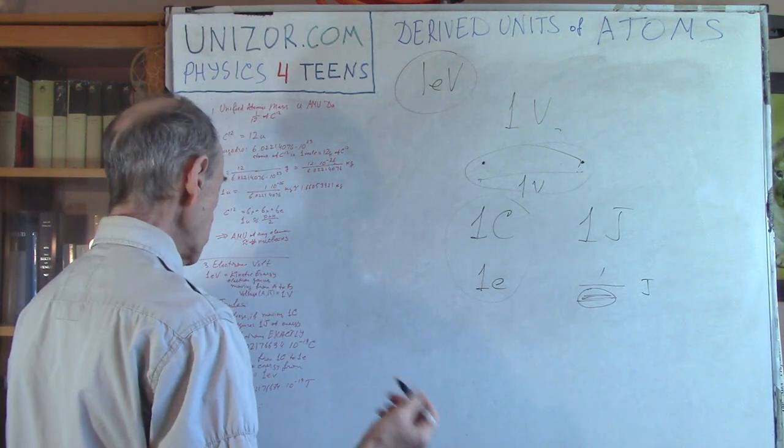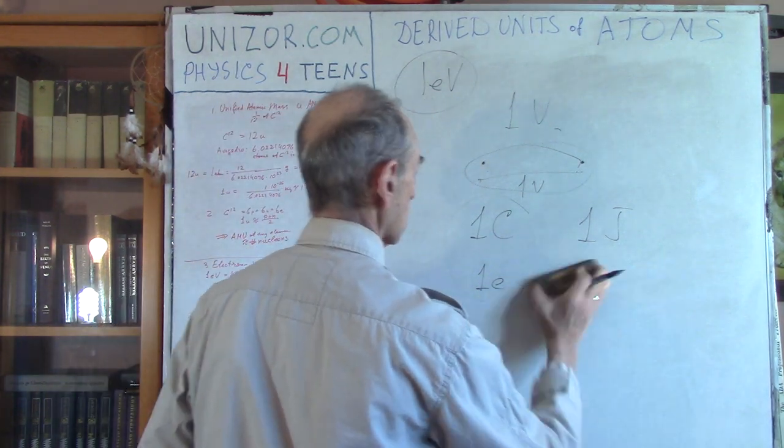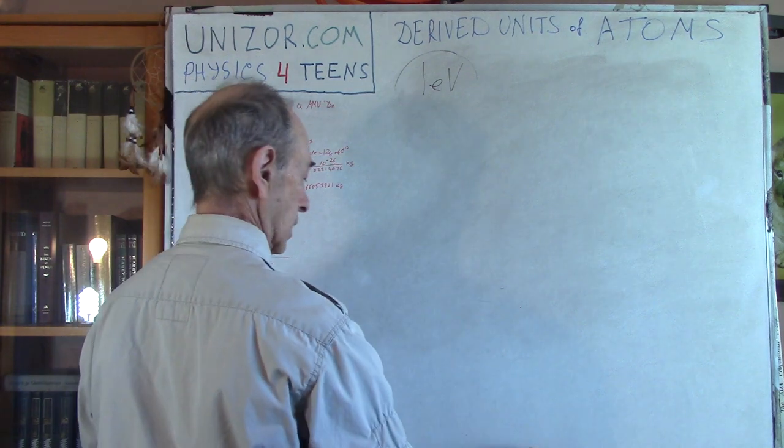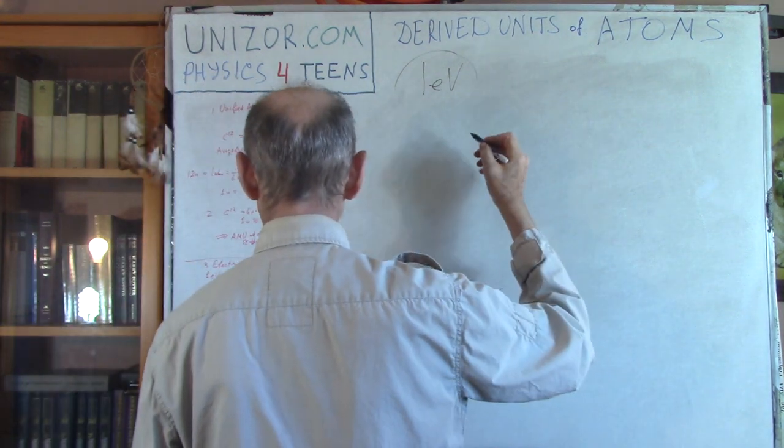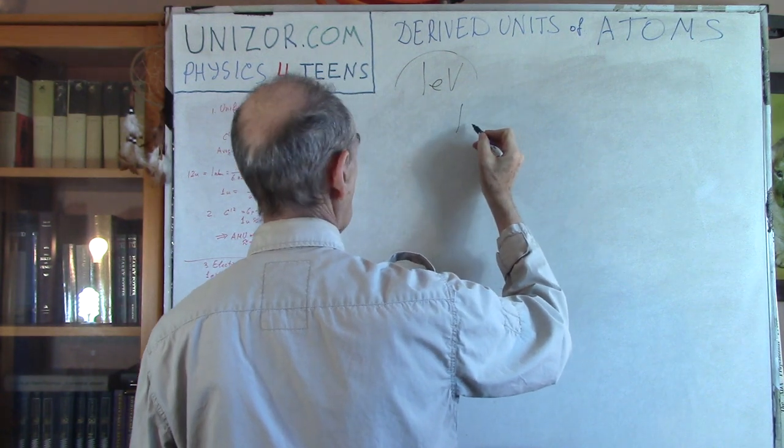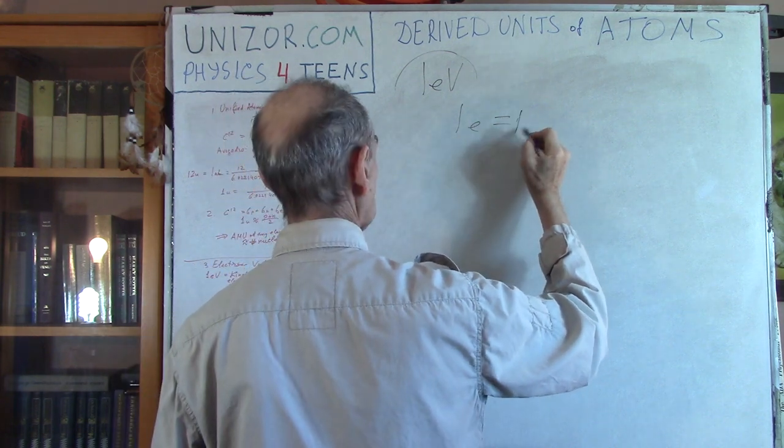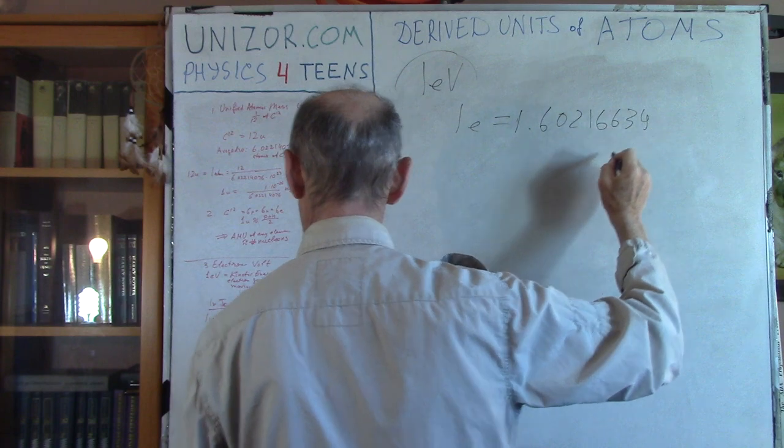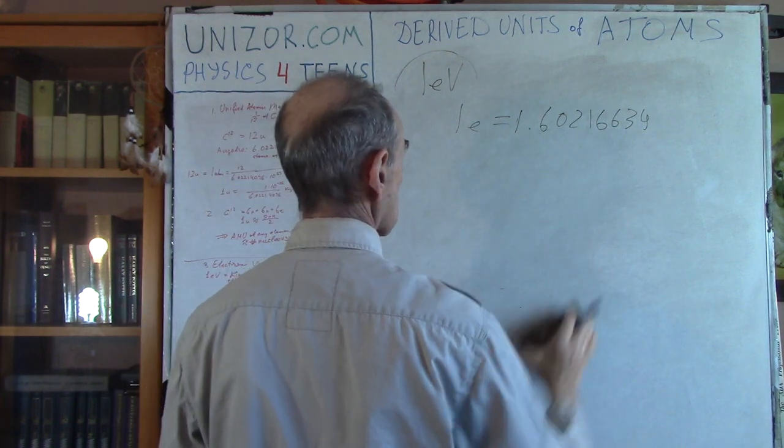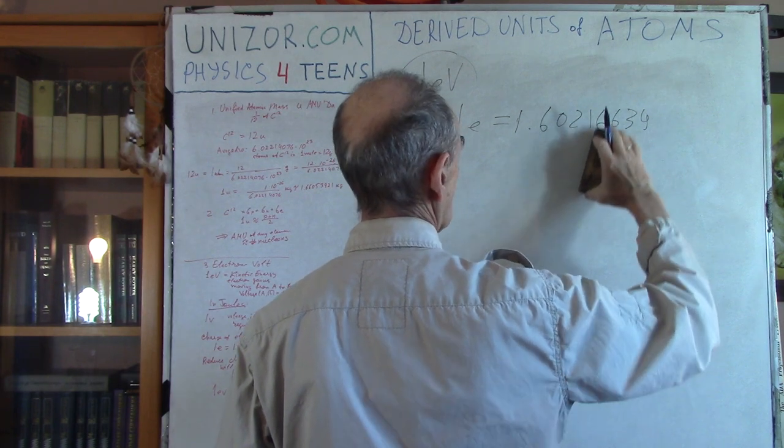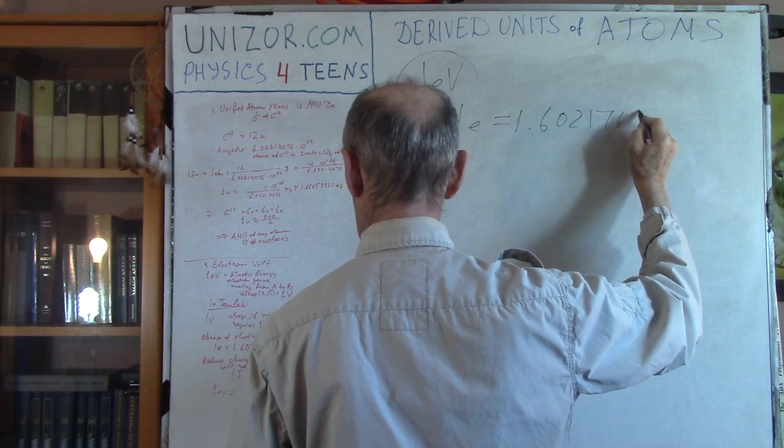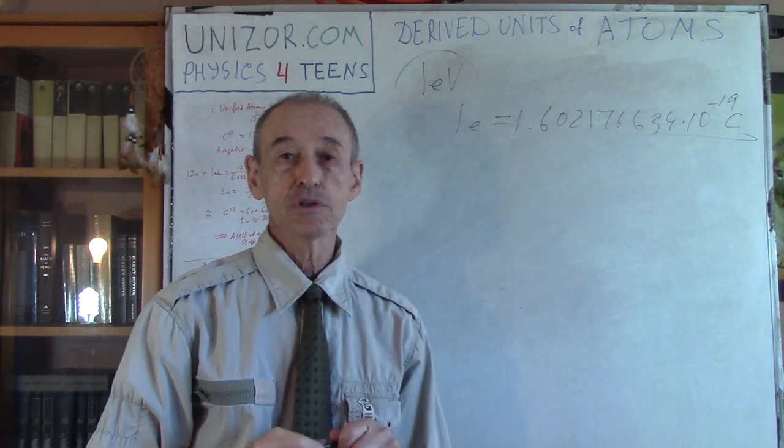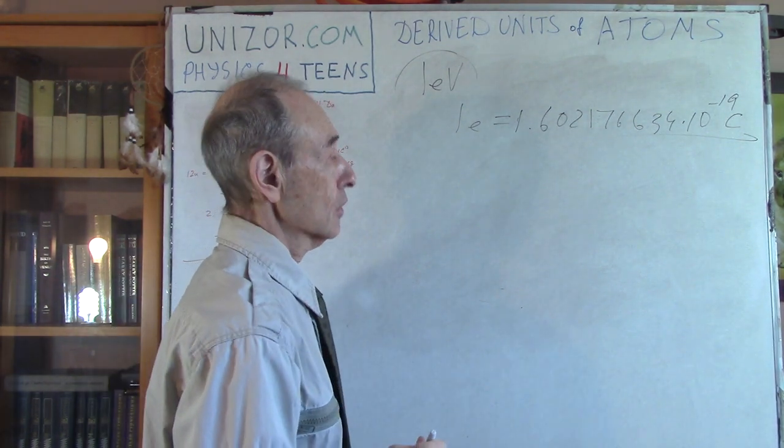For this, we have a definition of Coulomb. From definition of Coulomb, if you will go to the lecture which is devoted to the units of measurements of electricity, you will see that one Coulomb is such a measurement that one electron charge is 1.60217662634 times 10 to the minus 19 Coulomb. That's basically the direct consequence from the definition of Coulomb.